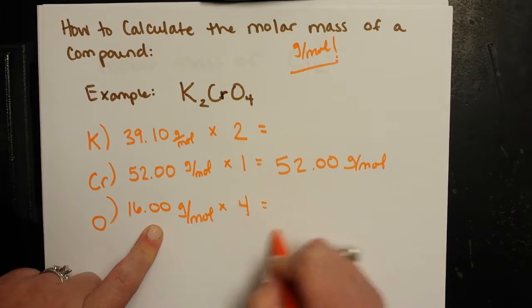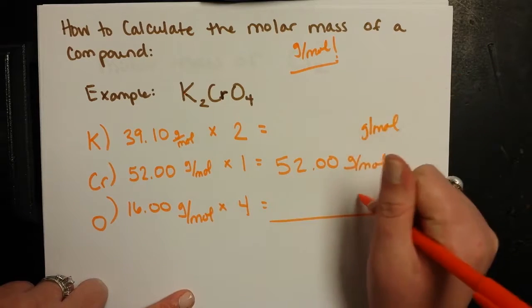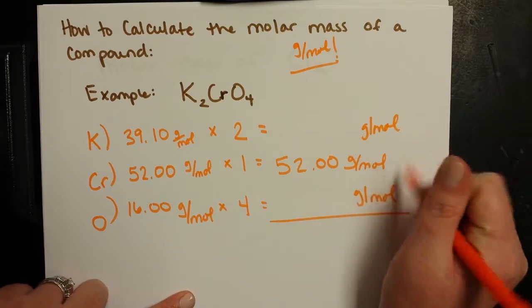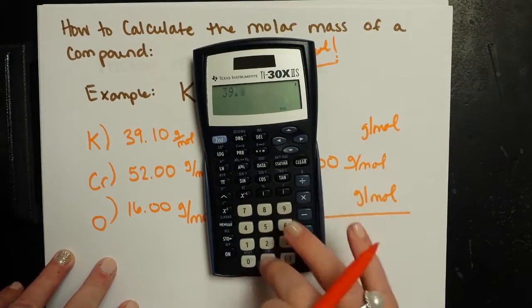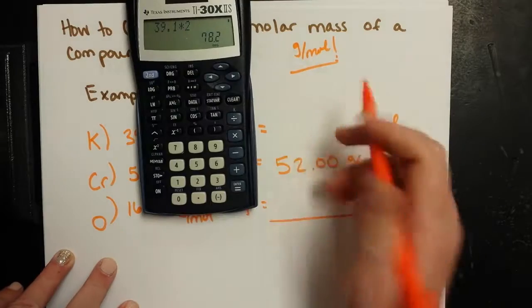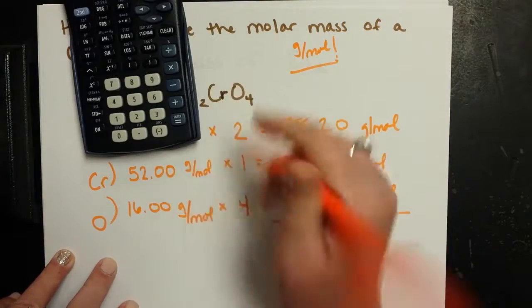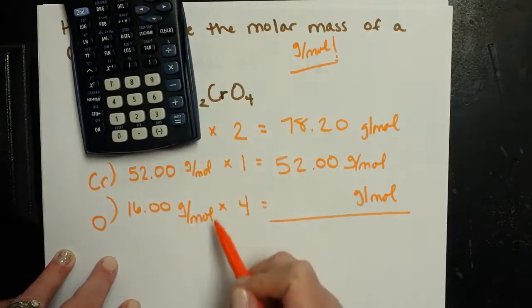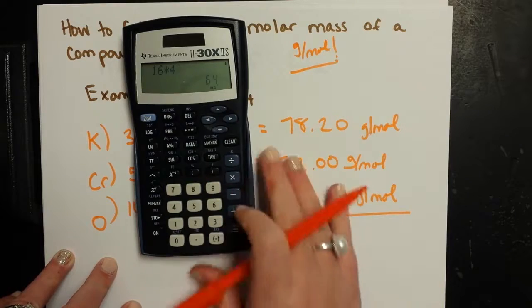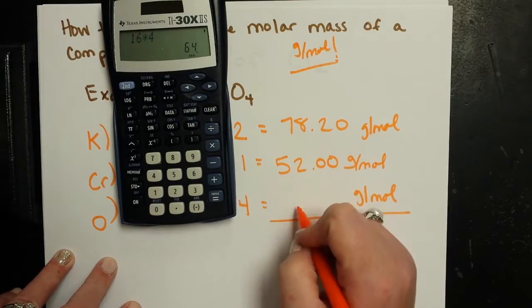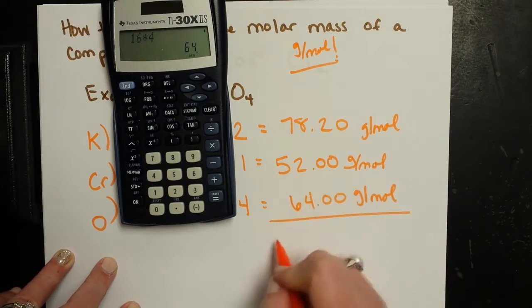So what I do then, let's go ahead and bring out your units. Let's see, we should get 78.2 or so. Yep, 78.20 grams per mole still. Here I've got 16 times 4. So we've got 16 times 4, we've got 64. That makes a lot of sense. So we get 64.00.